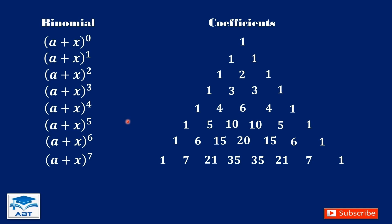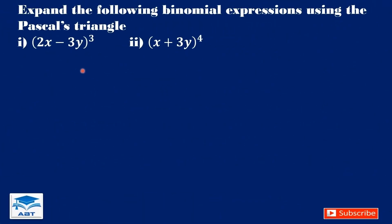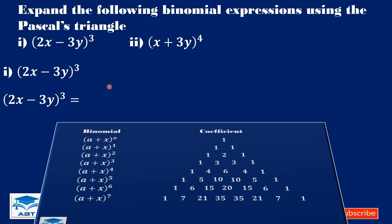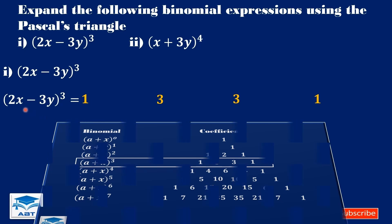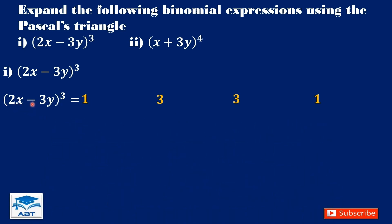Now let's see how we can apply Pascal's triangle to expand binomials. Expand the following binomial expressions using Pascal's triangle. Let's take the first one: (2x − 3y) to the exponent 3. For a binomial with an exponent of 3, the coefficients are 1, 3, 3, and 1. So we space them out. The binomial terms are 2x and negative 3y.